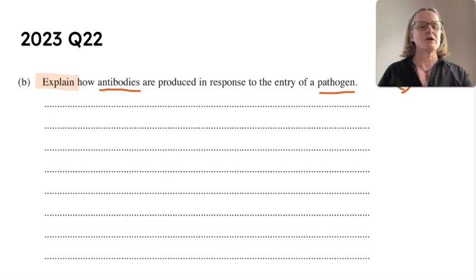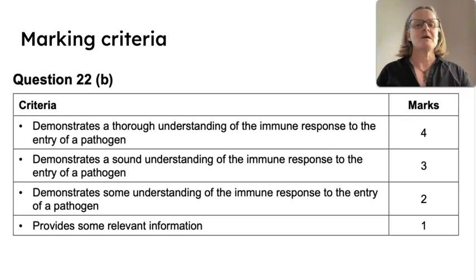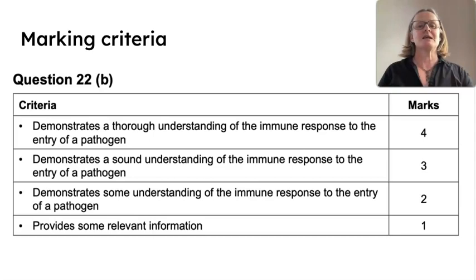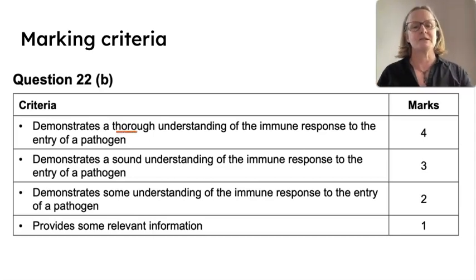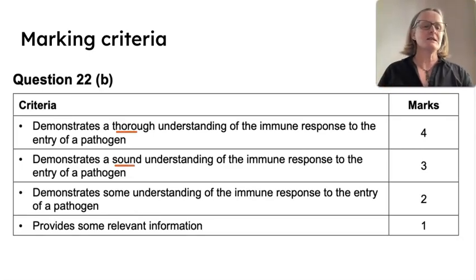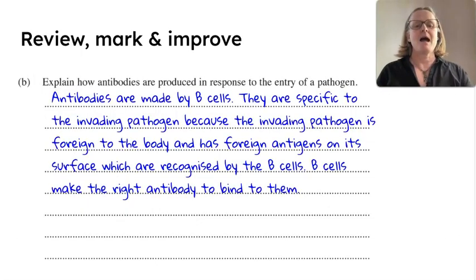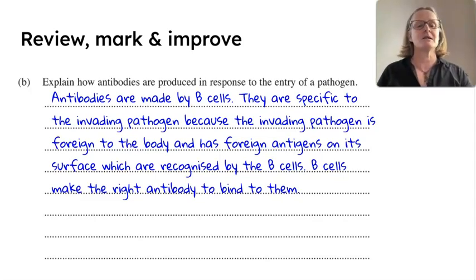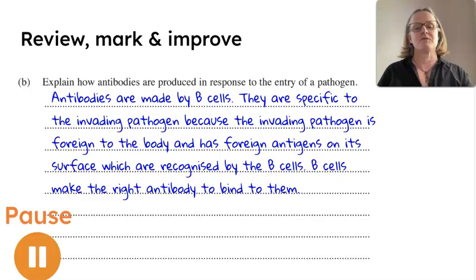Let's have a quick look at the marking criteria — pause this if you want to have a look. It's not super helpful; it just tells us that to get different marks you want to be either thorough and very detailed, sound, or less than that. Let's have a look at what this student has done. Read this with the marking criteria, make a decision as to whether they are correct or incorrect, and how many marks they have got.